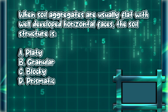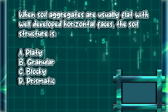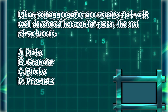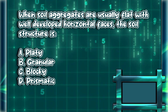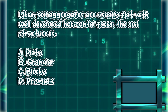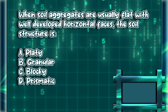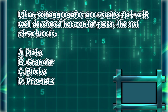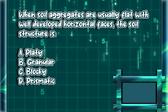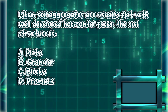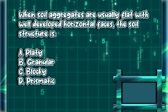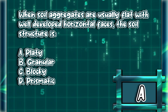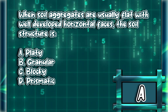When soil aggregates are usually flat with well-developed horizontal faces, the soil structure is: A. Platy. B. Granular. C. Blocky. D. Prismatic. The answer is letter A.